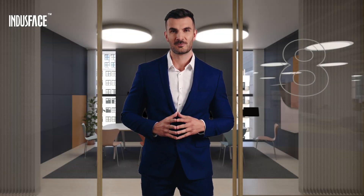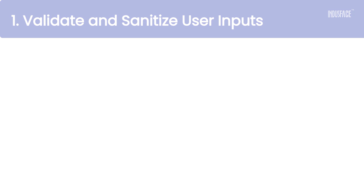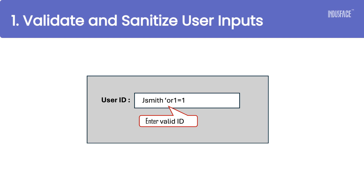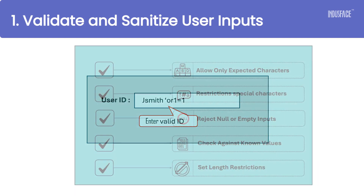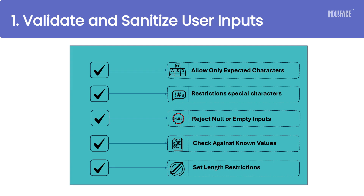But don't worry — we've got the tips you need to protect your app. Let's jump in. Start by validating and sanitizing all user inputs. Define strict input rules to allow only acceptable characters and formats.